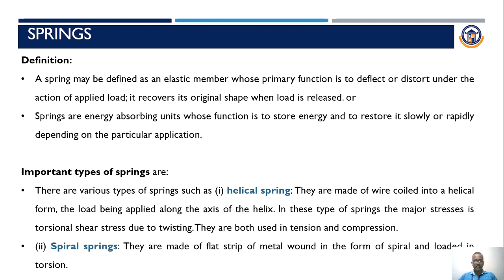Important types of spring are helical spring, spiral spring, and leaf spring. First we see helical spring. The helical springs are made of wire coiled into a helical form. The load is applied on the axis of the helix, due to which the spring gets compressed. The major stress developed in the spring is torsional shear stress, due to the twisting action of the spring. They are used in both tension and compression type.